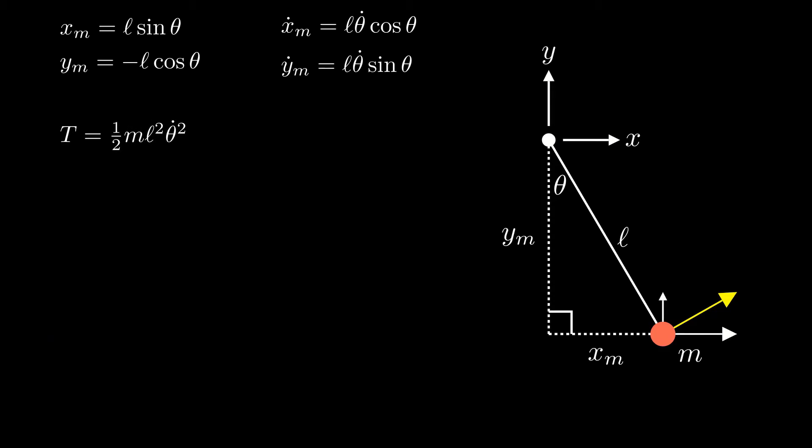Now, we're ready to solve for our potential energy, V. V equals mgh, where h is the height of our mass above the x-axis. We already have h, that's just ym, so plugging in our expression for ym, we end up with an expression for our potential energy in terms of theta.